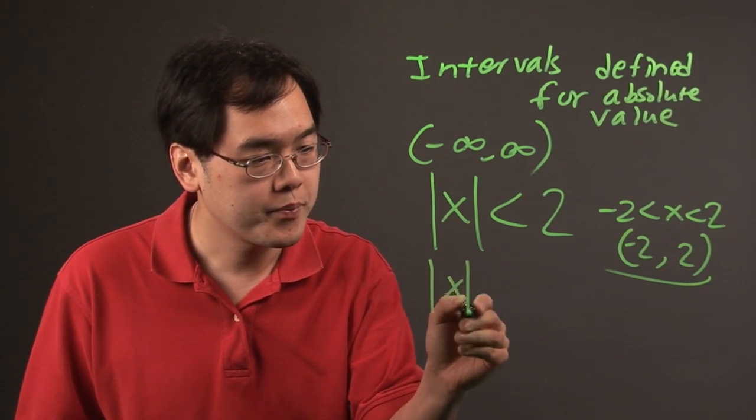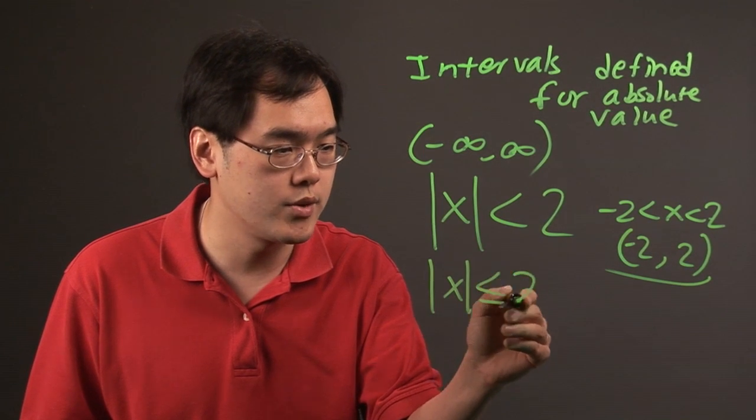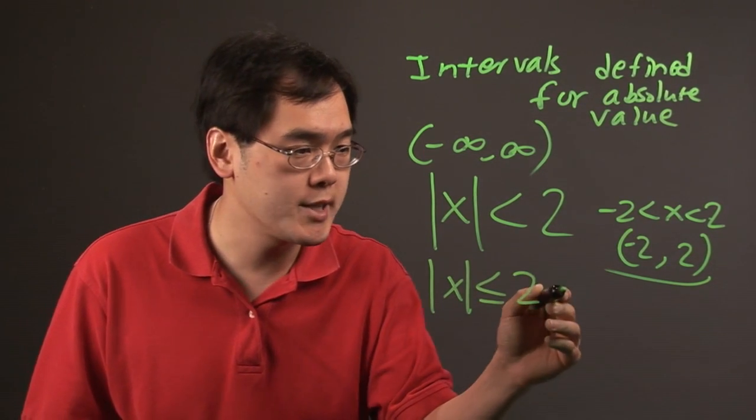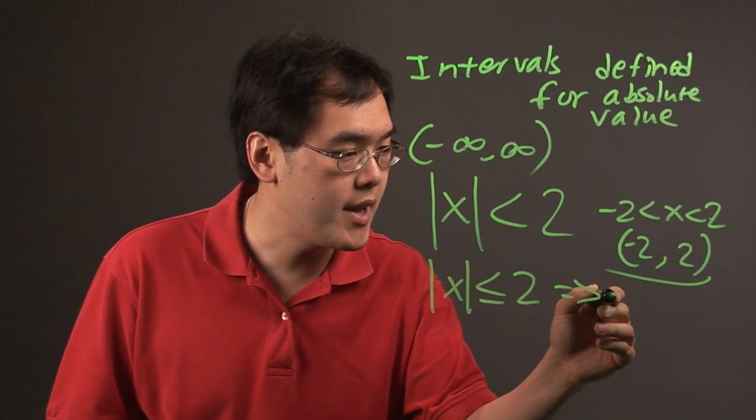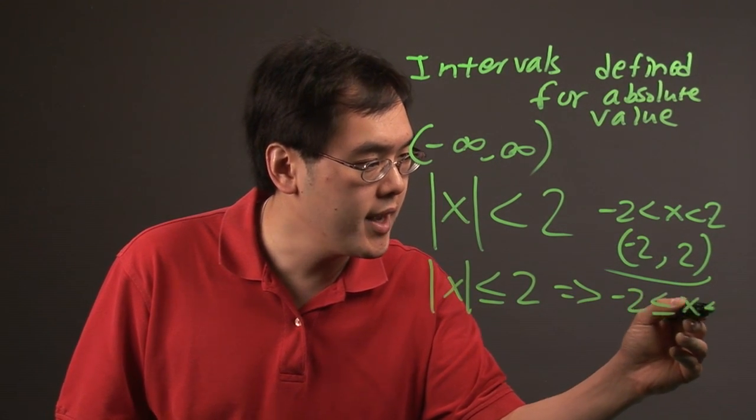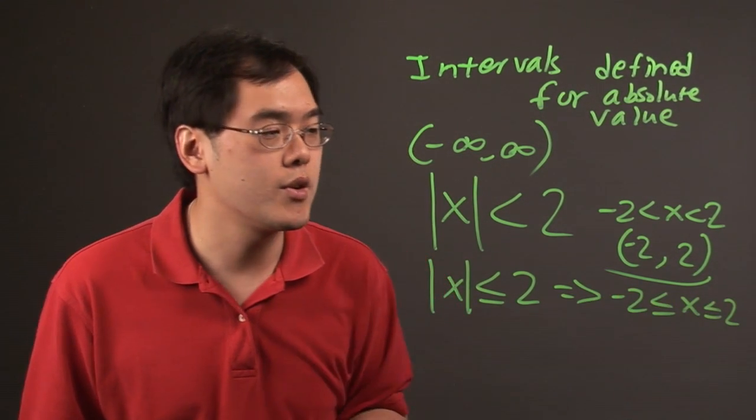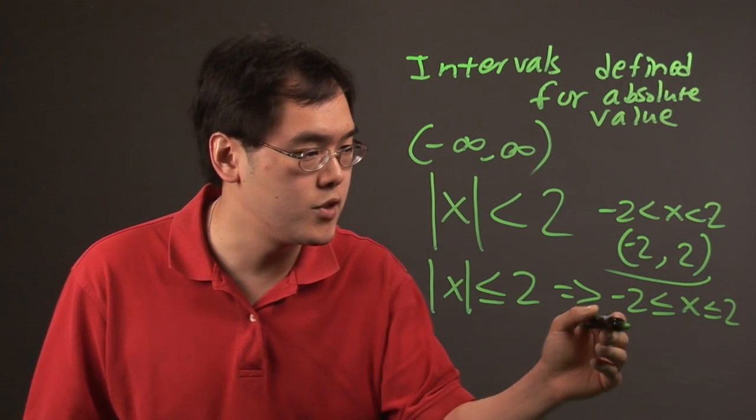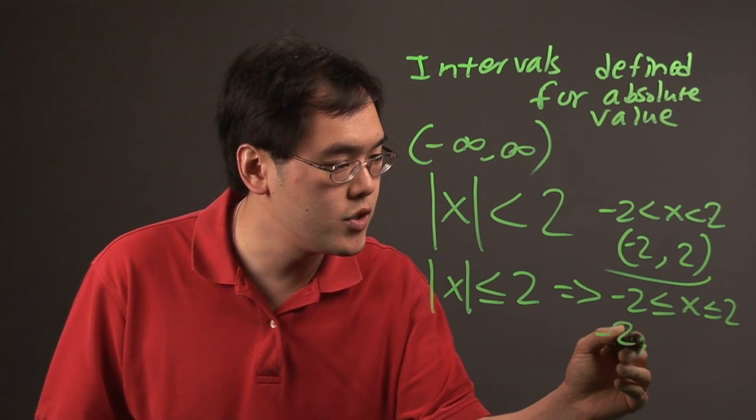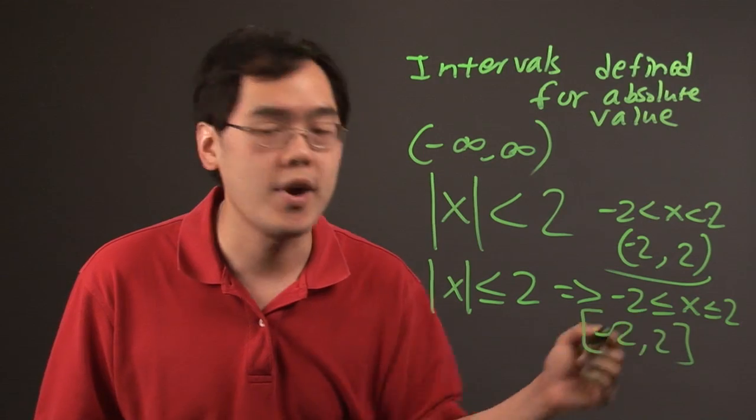If you have a situation where the absolute value of x is less than or equal to 2, where equality is possible, you can write it as negative 2 less than or equal to x less than or equal to positive 2, with brackets surrounding negative 2 and 2.